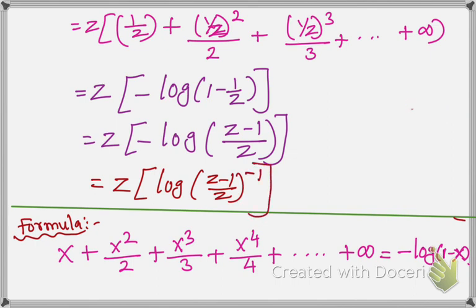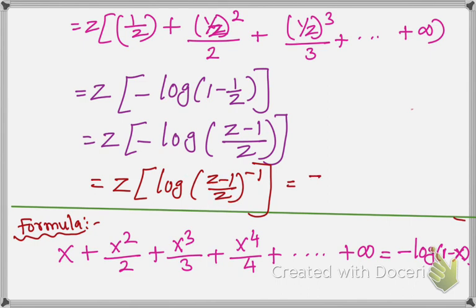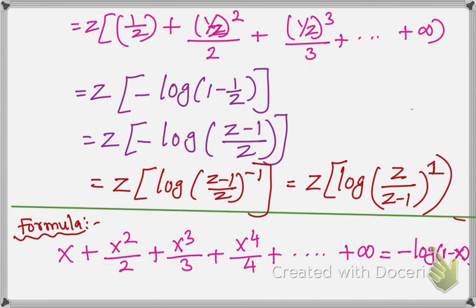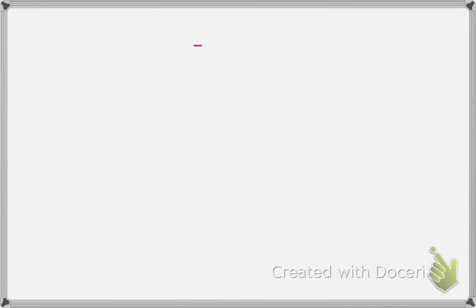Next, we change the negative sign to positive by switching the denominator into the numerator and numerator into denominator — the upside goes down, the downside goes up. So C comes up and C minus 1 goes down. This equals C times log of C over (C minus 1), and the power is now positive 1.